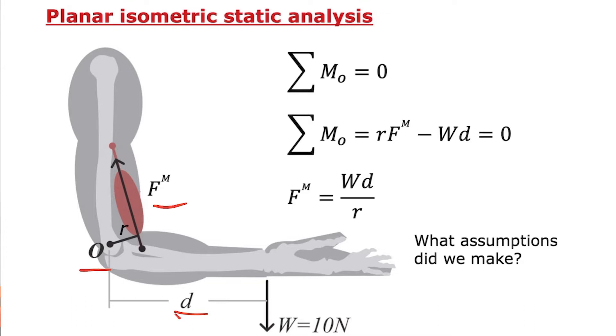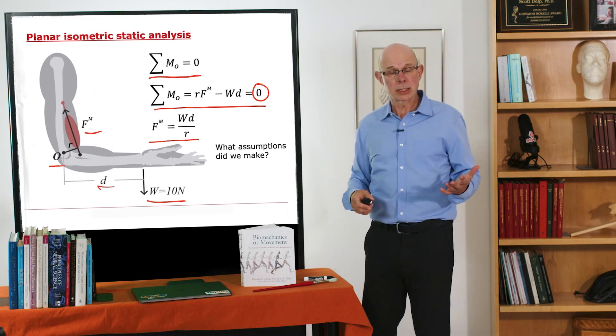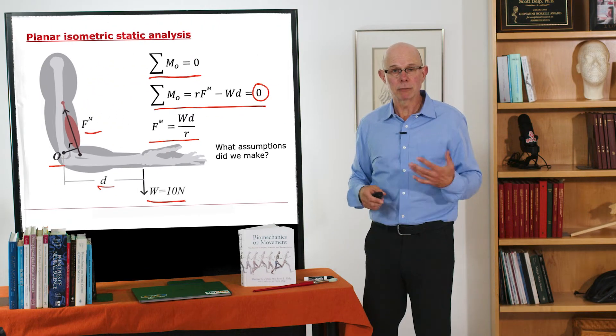So because it's static, there are no dynamics, there's no acceleration, so the sum of the moments equals zero. The sum of the moments is equal to R times F minus W times D, so that's going to be equal to zero. So the force in the muscle is just this weight times its distance divided by R, the moment arm. So that's easy enough calculation. We could find the force in the muscle.